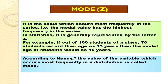Now, what is mode? Mode is the value which occurs most frequently in the series — that is, the modal value has the highest frequency. Mode is denoted by Z. For example, if out of 100 students, 70 record their age as 15 years, then the modal age is 15 years. According to Kenney, the value of a variable that occurs most frequently in a distribution is called mode.